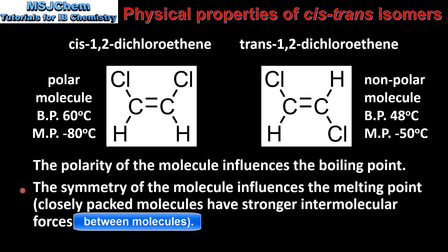The symmetry of the molecule influences the melting point. This is because closely packed molecules have stronger intermolecular forces. The molecules in the trans isomer are able to pack more closely together, therefore the trans isomer has the higher melting point.